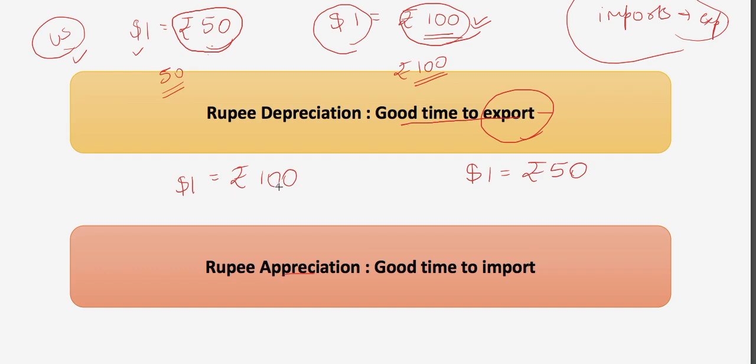So when the rupee depreciates, it is a good time to export and imports become expensive. When the rupee has appreciated, earlier you were buying a watch from America worth rupees 100, but now after the rupee appreciation, you just have to give rupees 50 to buy that same watch of dollar one.